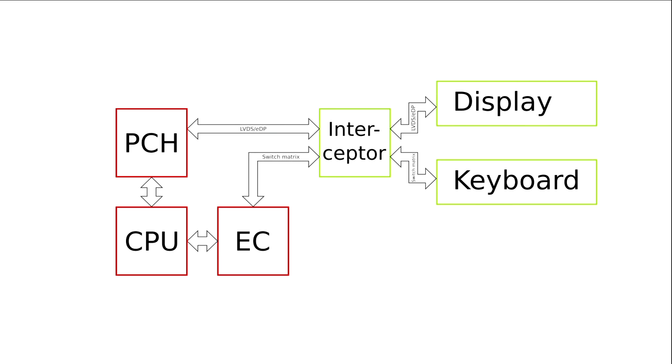So if we look at this block diagram of this general idea on how we could organize our computers, we have this interceptor device. It needs to do something with LVDS — receive it, process it, send it back out — and do something with the keyboard switch matrix scanning. How would you actually control that from an application point of view, from software running on the host machine?